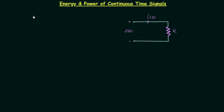From this lecture we are starting a very important topic: energy and power signals. This topic is important because you will have questions from it in your university examinations as well as in your competitive examinations. In this lecture we are going to understand how to calculate the energy and power of continuous time signals, derive the formulas for total energy and average power, understand what are energy signals and power signals, cover examples, and explain what are neither energy nor power signals.